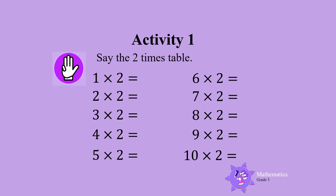Activity 1. Let's say the 2x table together. Are you ready? 1x2 is 2. 2x2 is 4. 3x2 is 6. 4x2 is 8. 5x2 is 10. 6x2 is 12. 7x2 is 14. 8x2 is 16. 9x2 is 18. 10x2 is 20.